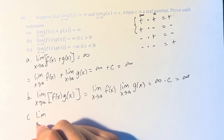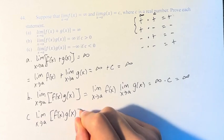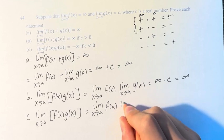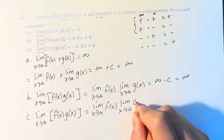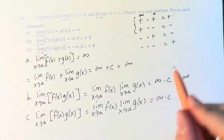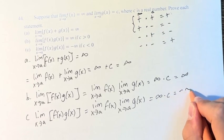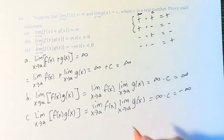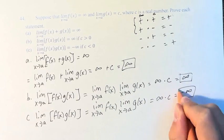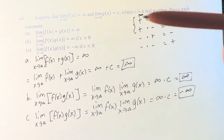Meanwhile, in part c, the limit as x approaches a of f of x times g of x, except c is less than 0, so this is the same — we split it up using the limit laws and we still get infinity times c. However, in this case, infinity is positive and c is negative. Therefore, the result is negative infinity. Therefore, we prove that it's equal to infinity, infinity, and negative infinity for the following limits as x approaches a for f of x and g of x.